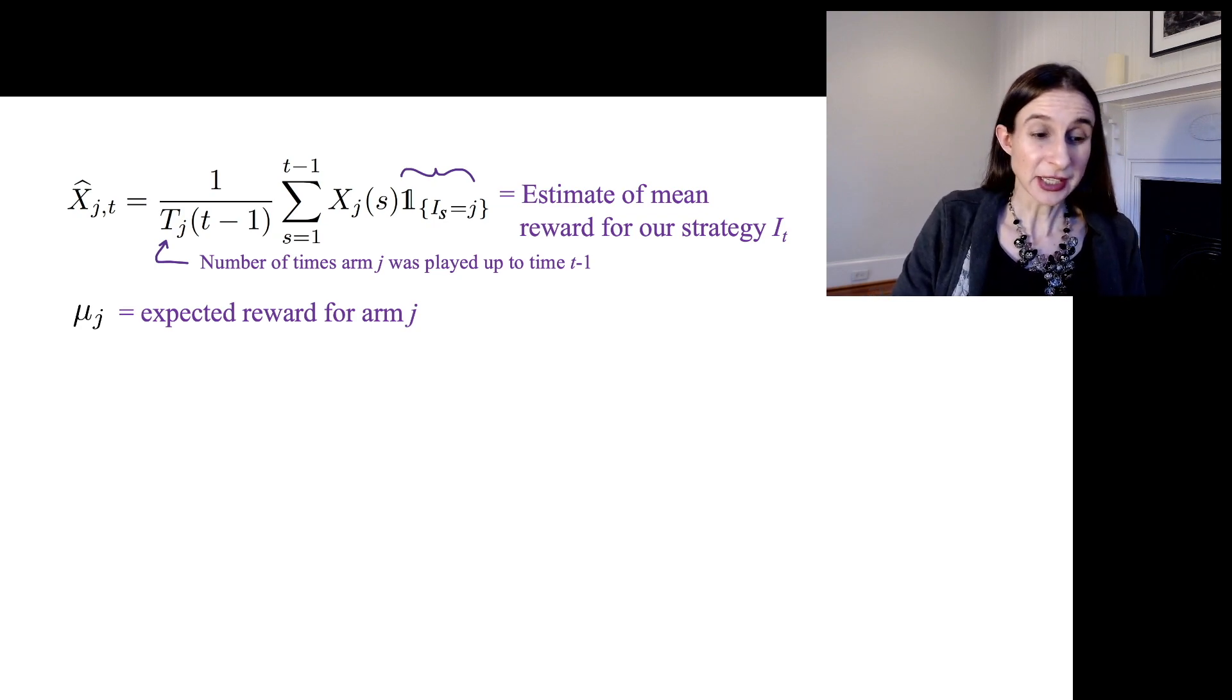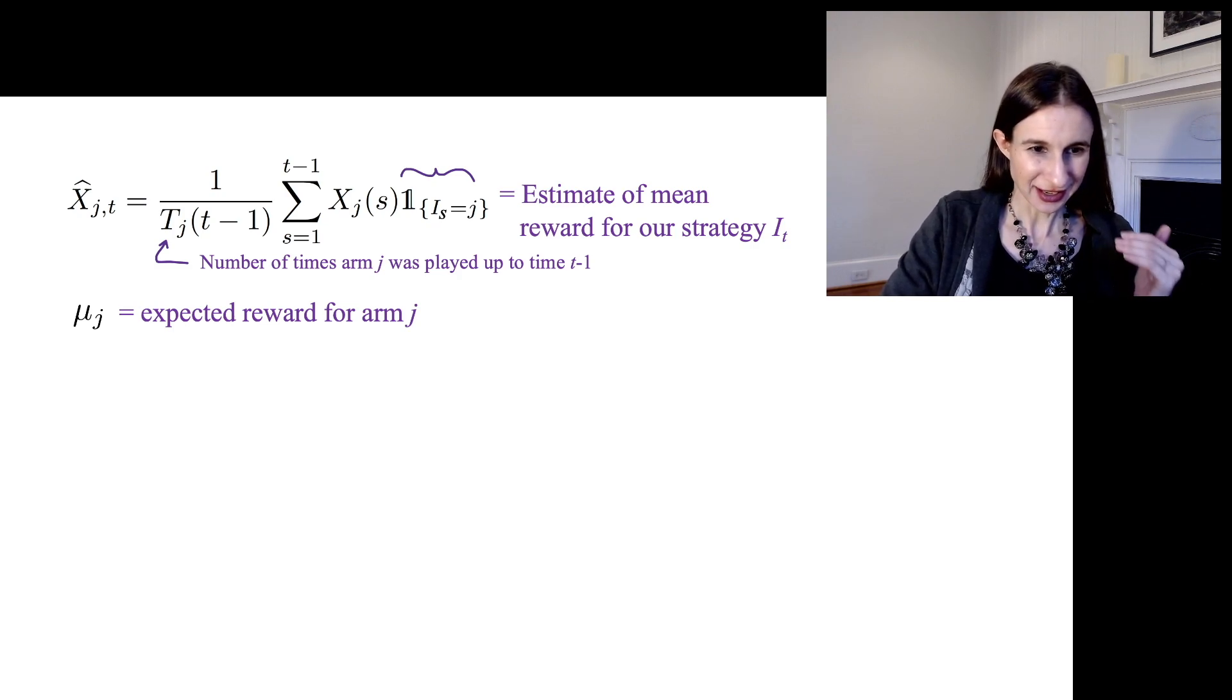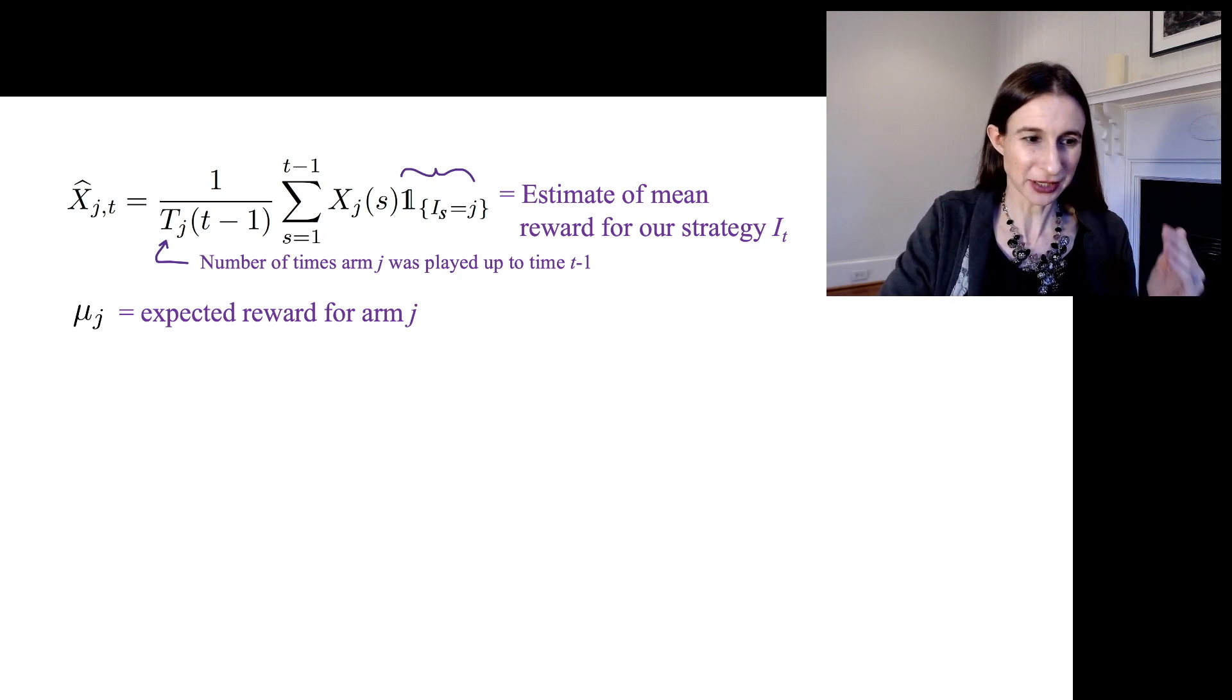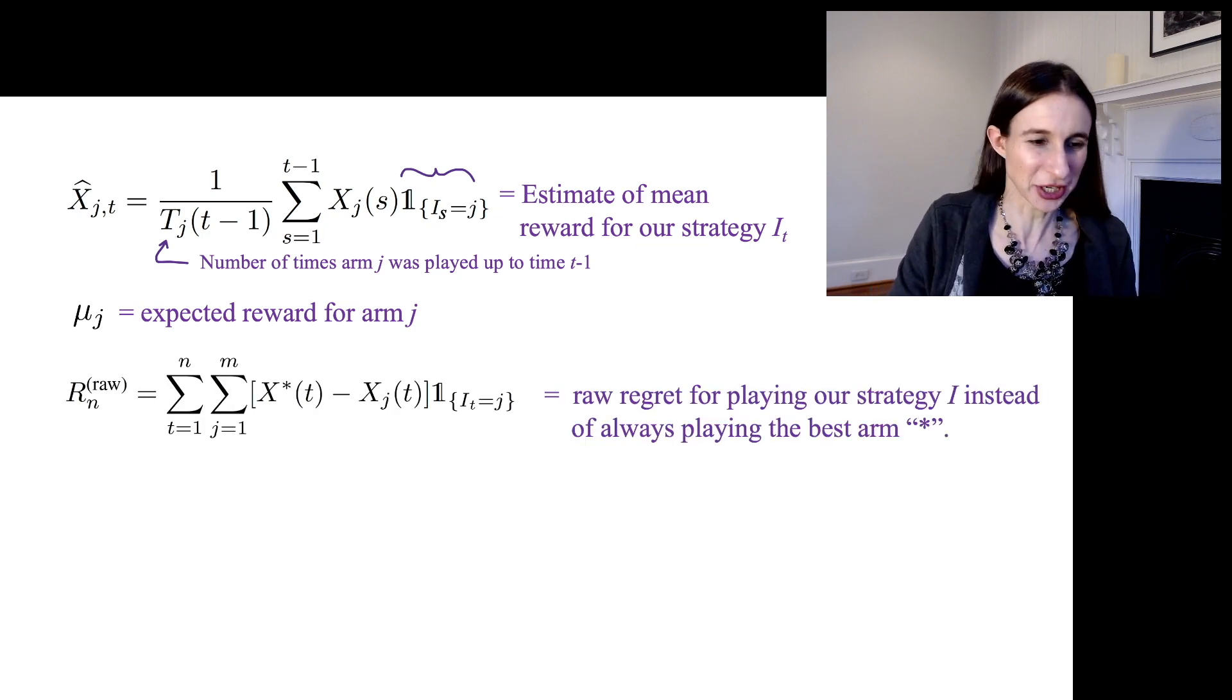Now μ_j is the expected reward for arm j. It would be good if our estimate of the mean of arm j was close to the expected reward for arm j, but we might give up before actually finding out what arm j's actual mean is, depending on our strategy.